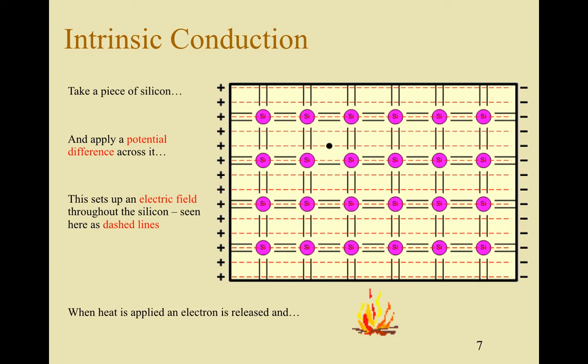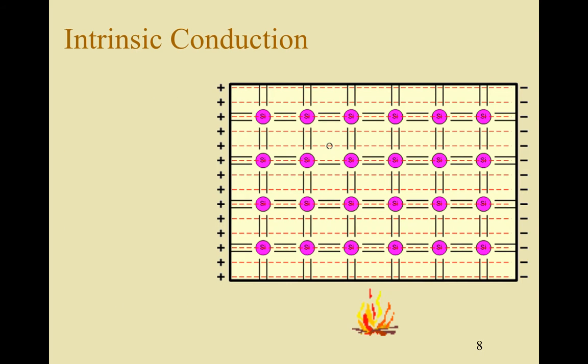And if we apply heat to it electron hole pairs are created and the electrons being negatively charged will travel to the left so travel to the positive terminal. There should be an animation here but unfortunately it's not working. The positive holes that are created will then travel to the right. So the charged particles will travel to the oppositely charged plate due to the presence of that electric field.